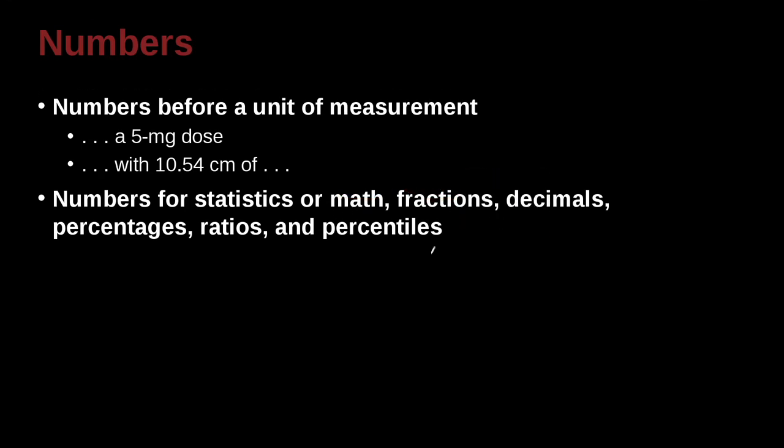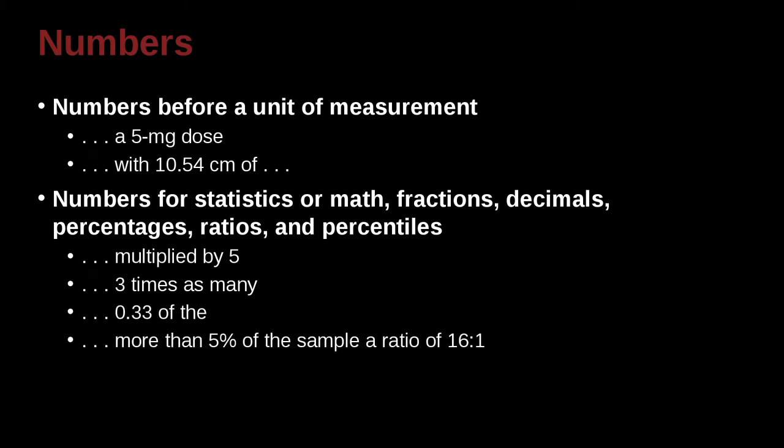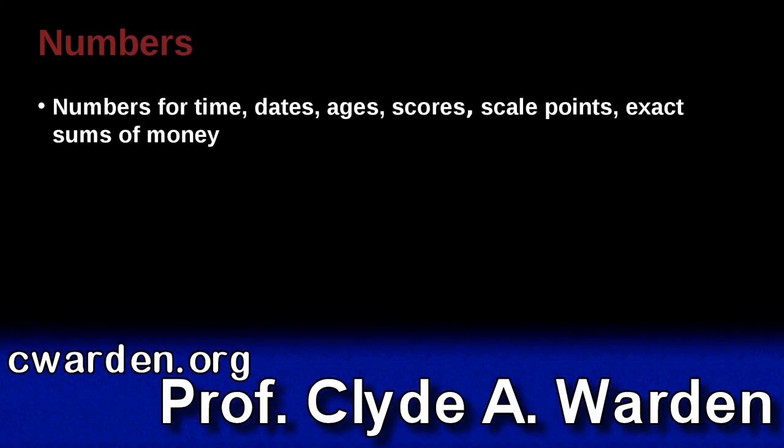Numbers for statistics, for math, for fractions, for decimals, for percentages, for ratios, and for percentiles, should all be written by the number like this. Multiplied by 5, 3 times as many, 0.33, more than 5% of the sample, a ratio of 16 to 1, the 5th percentile. So these are percentile groups, that is groupings. You should always use the number like that.